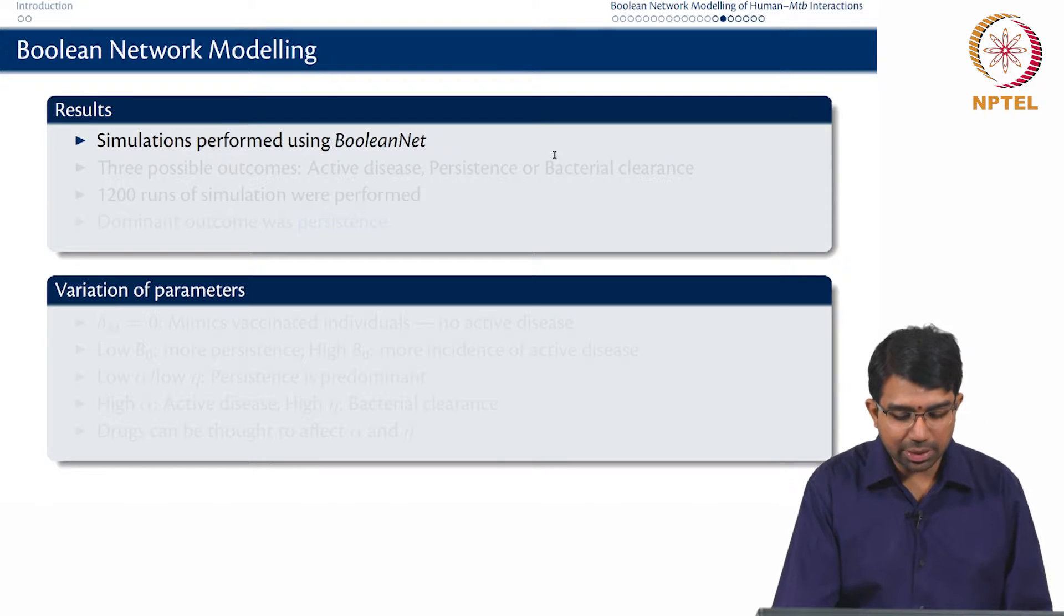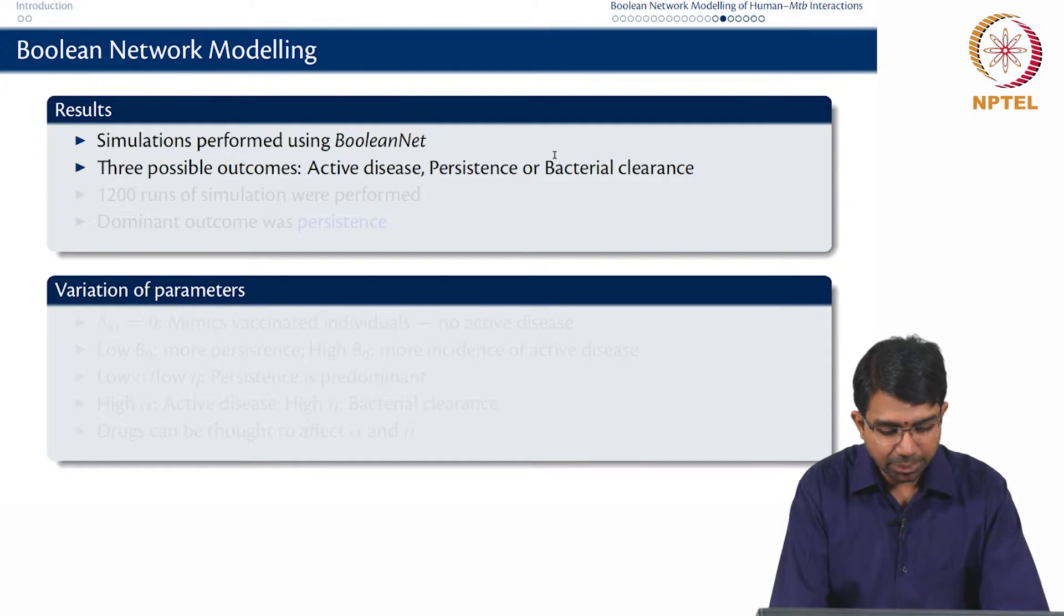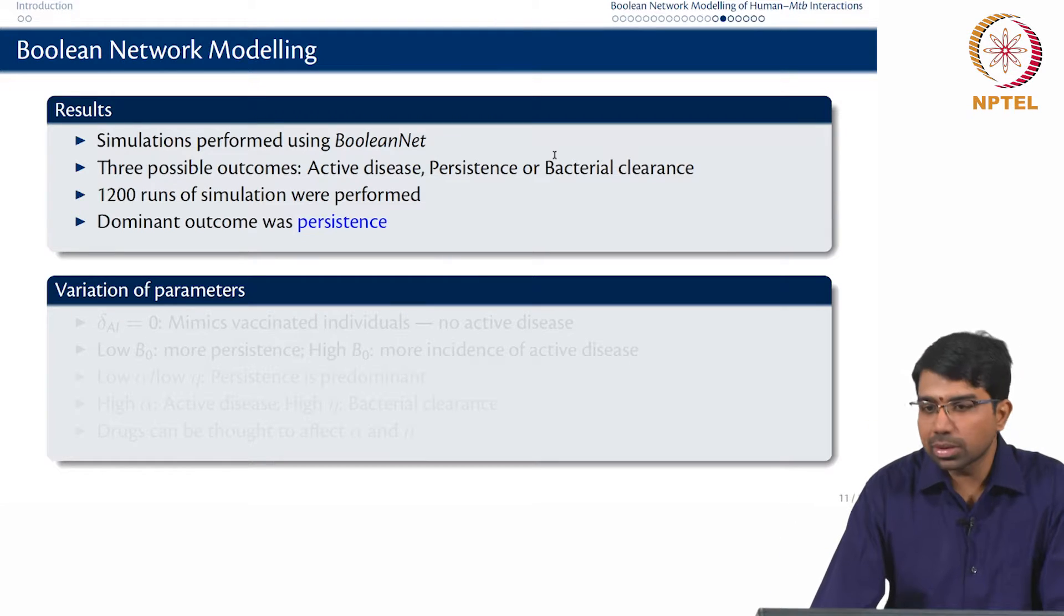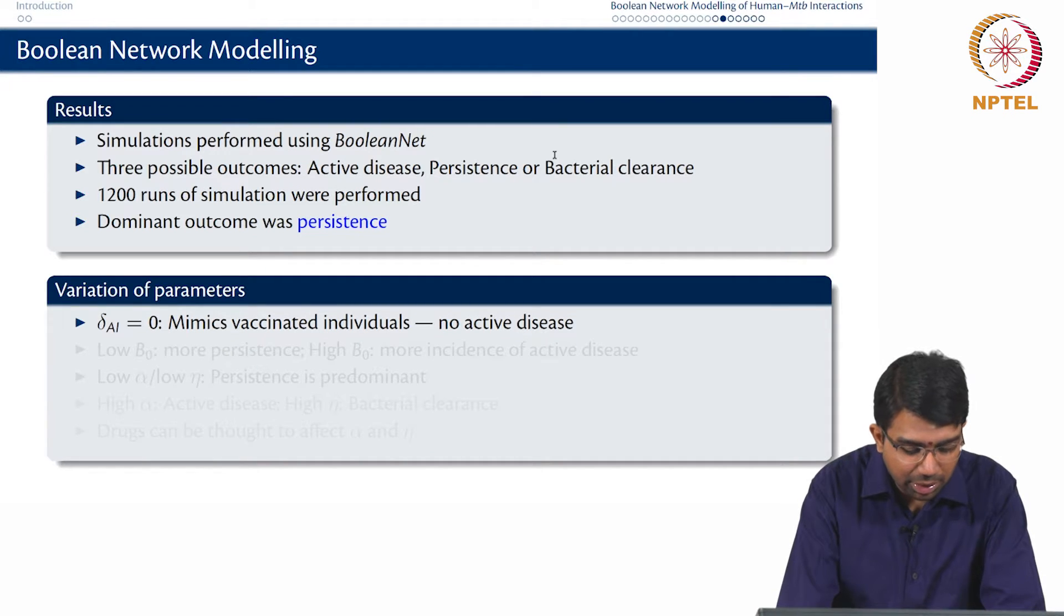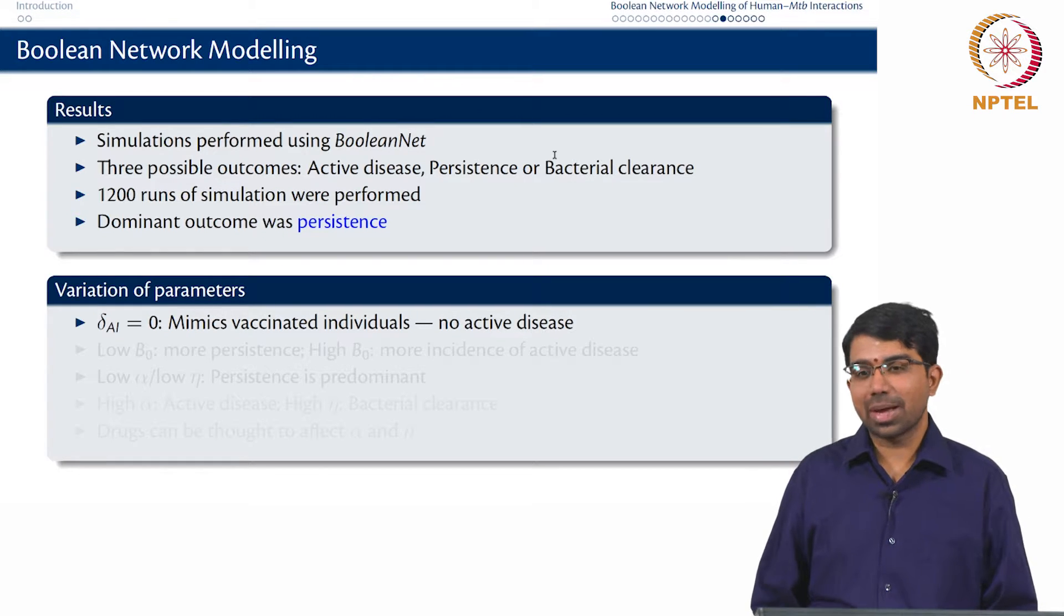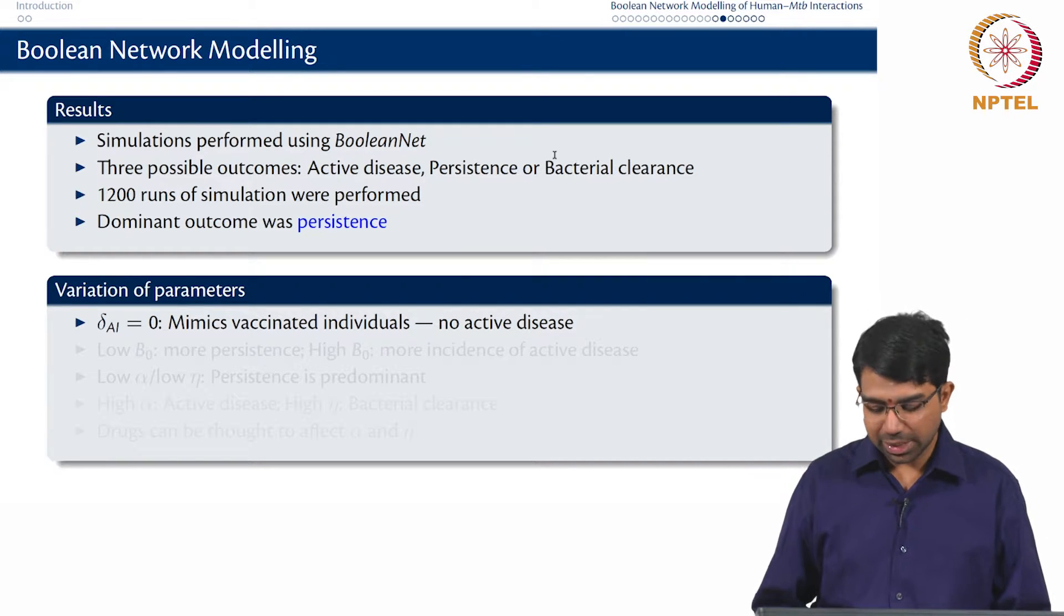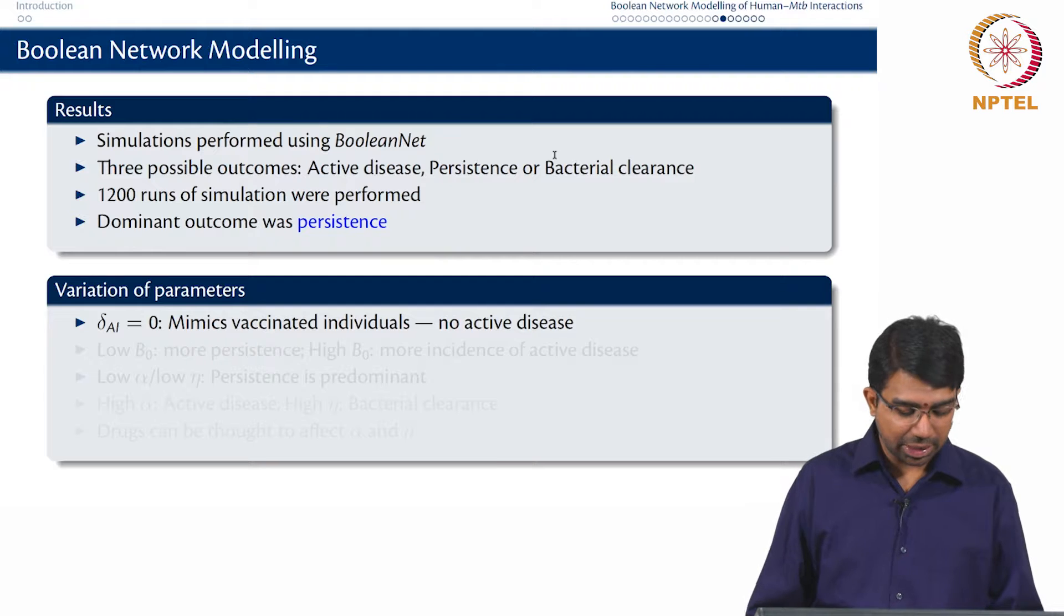So we performed the simulations using BooleanNet and we had 3 possible disease outcomes: active disease, persistence, or bacterial clearance. We performed 1200 runs of the simulation and the dominant outcome we found was persistence which is actually what happens in reality. TB, most people are just carriers of TB without actually even manifesting. What we found, for example, is that we can sort of mimic vaccination by putting delta AI is 0. So that is the adaptive immunity delay. So what does it mean when delta AI is 0? It means you have already been exposed, which is what happens during vaccination. And we find that in almost all cases they do not go towards active disease which is reasonable observation, but of course sometimes vaccinated individuals in reality can contract disease.